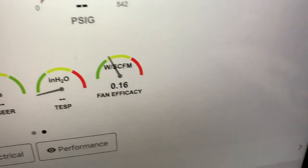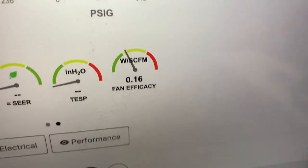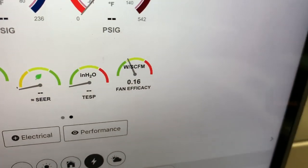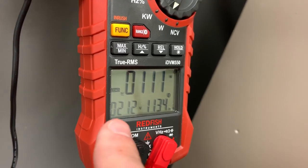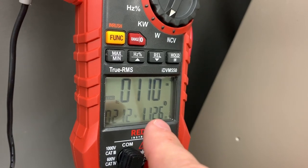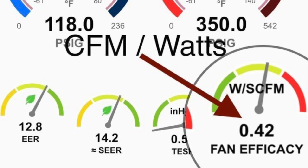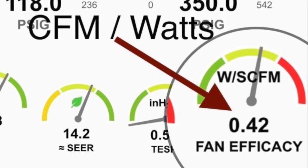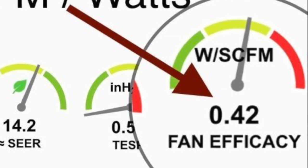In MeasureQuick, for example, they show fan efficacy as part of the measurements you can take. If you are using a power meter such as the Redfish IDVM550, you use that to measure the wattage, which is volts times amps times power factor in order to get those watts. That's actually very important — the power factor piece — because many of these blower motors have very low power factors. That's just the nature of a lot of ECM motors, so you have to take that into account to get a true wattage number.